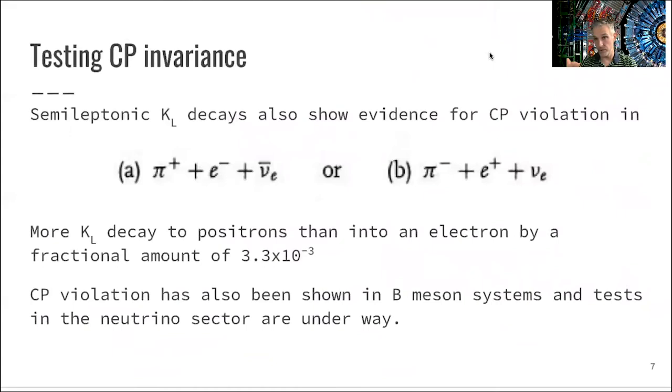We just saw that Cronin and Fitch observed CP violation in mixture of states. But we can also observe CP violation in direct decays. The classical example here is the case of the K-long in semileptonic decays. Semileptonic here means we have a decay of the K-long, the neutral particle into a charged pion, an electron, an antineutrino. Or it might very well also decay into a pi minus, a positron, and a neutrino.